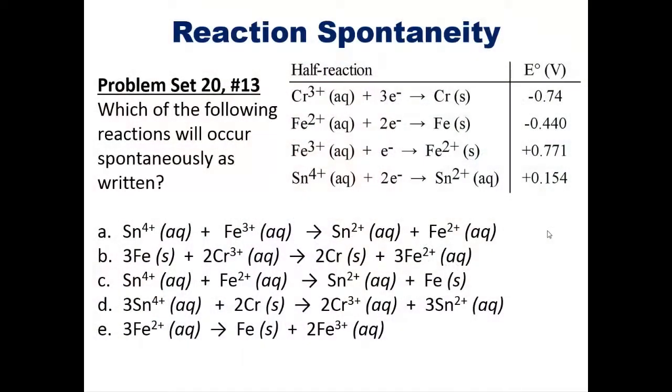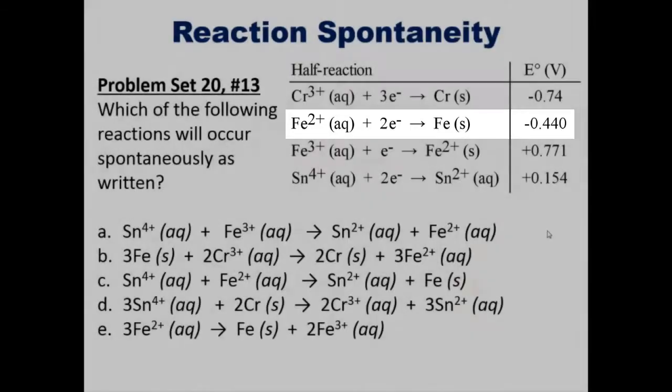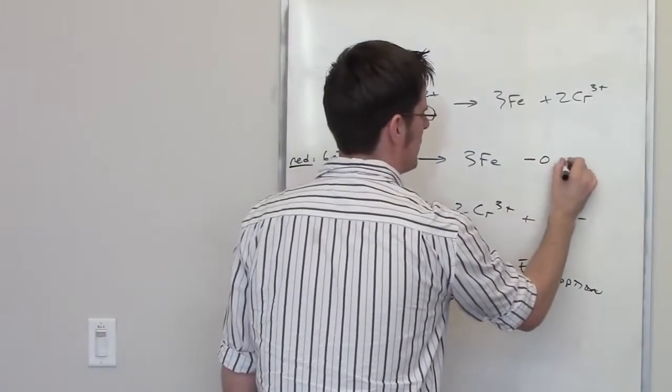Do you see any of these that have electrons on one side and iron 2+ on one side and then iron 0 on the other? Yeah, you see that the electron potential there is negative 0.44. So we'll go ahead and write that down, negative 0.44.